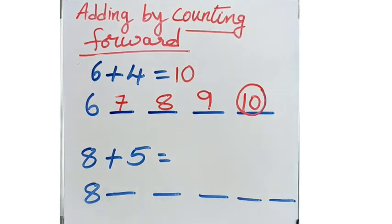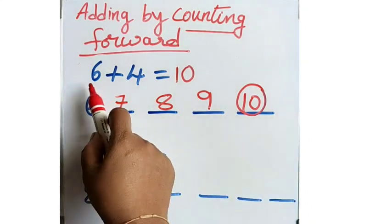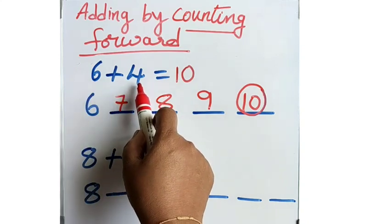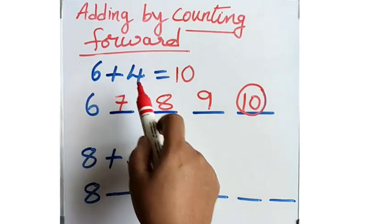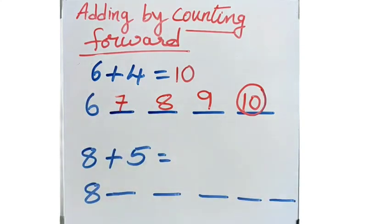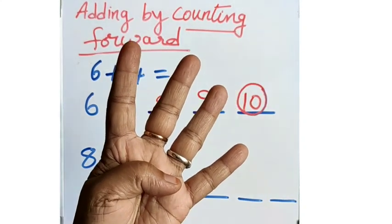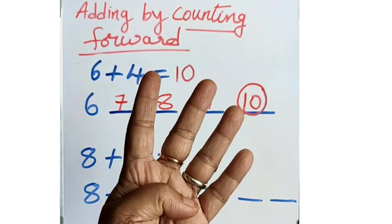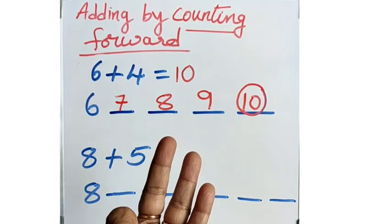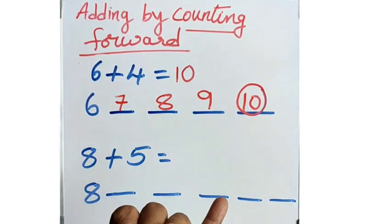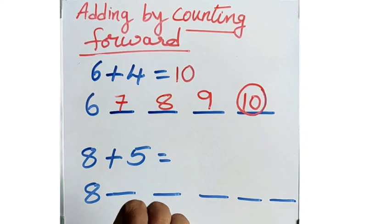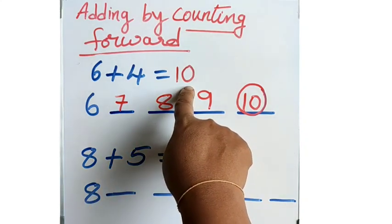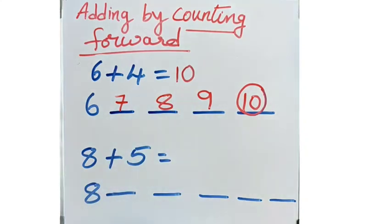One more way: the first number is 6, the second number is 4. So open 4 fingers. 6 after — 7, 8, 9, 10. So 10 is your answer.